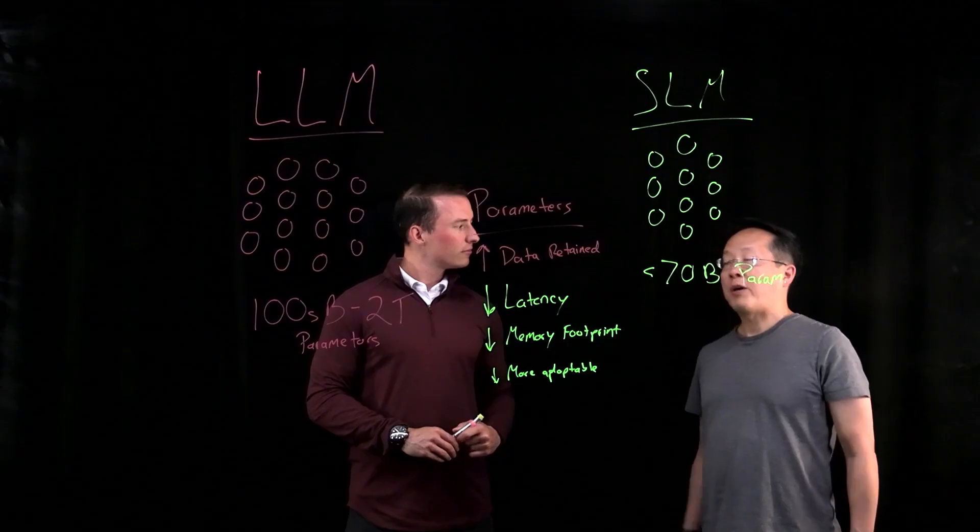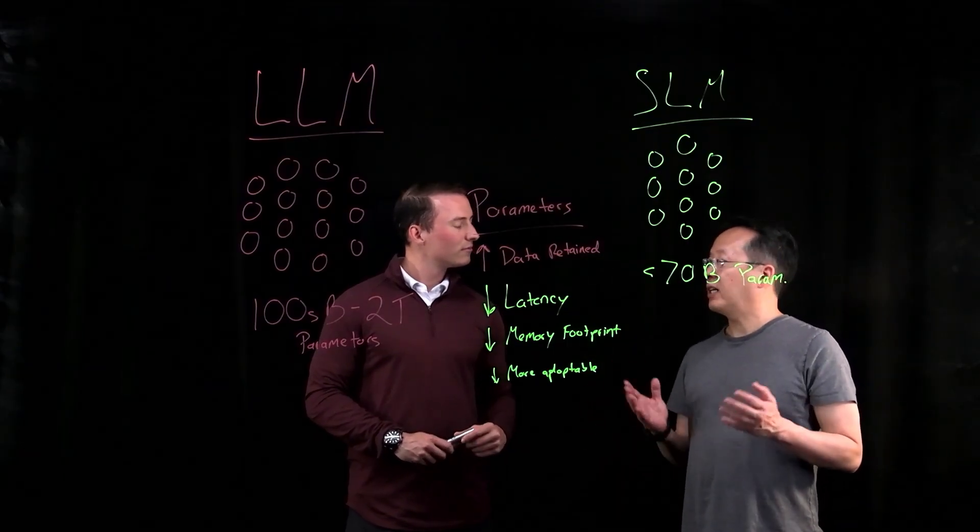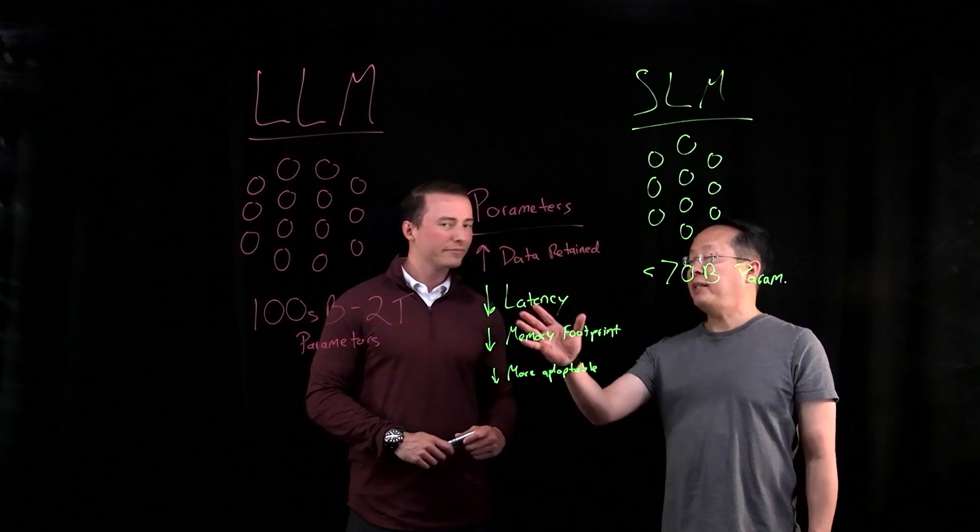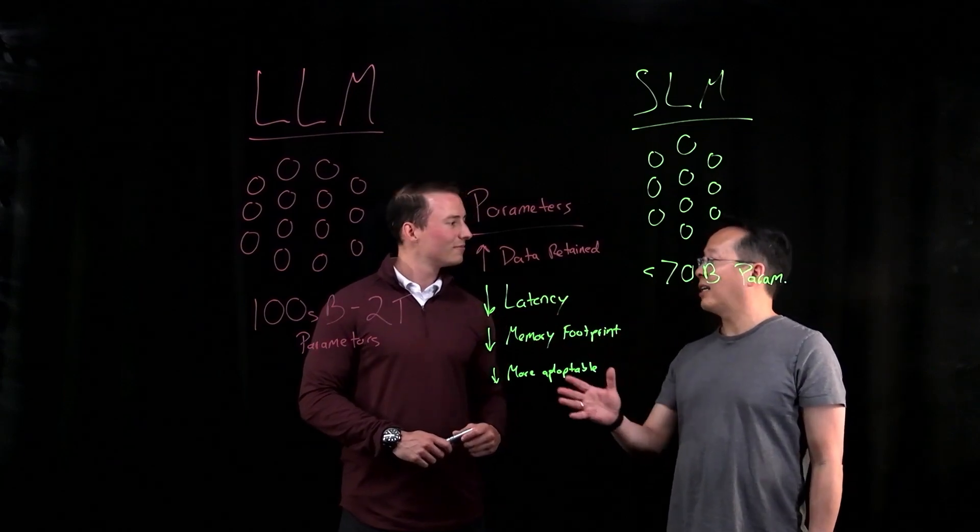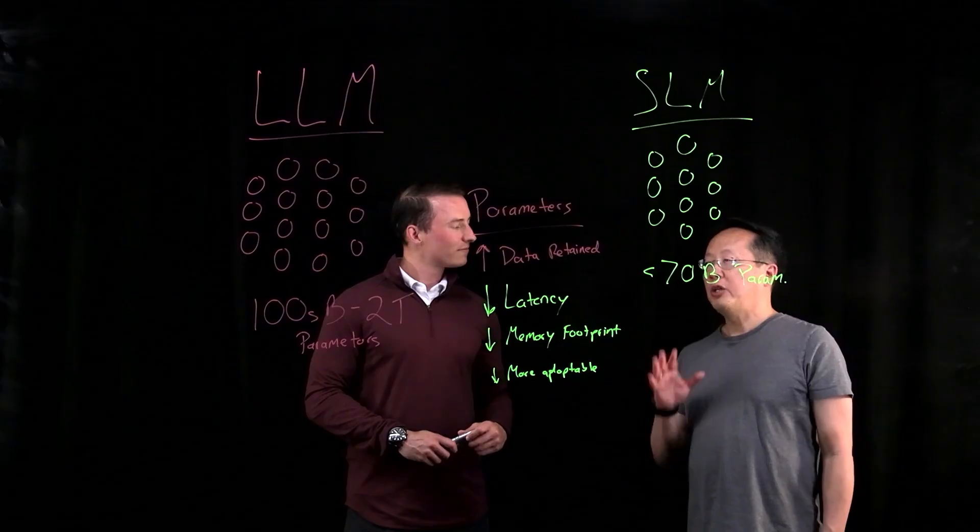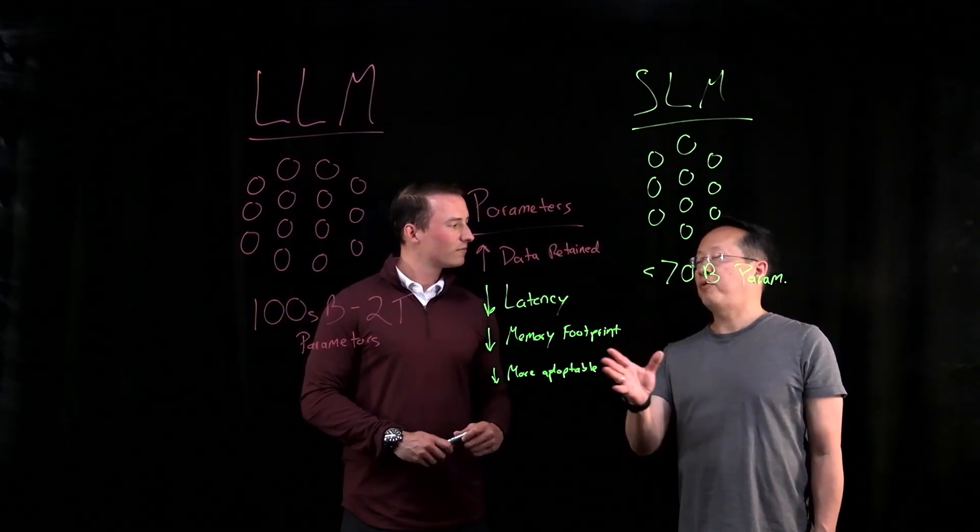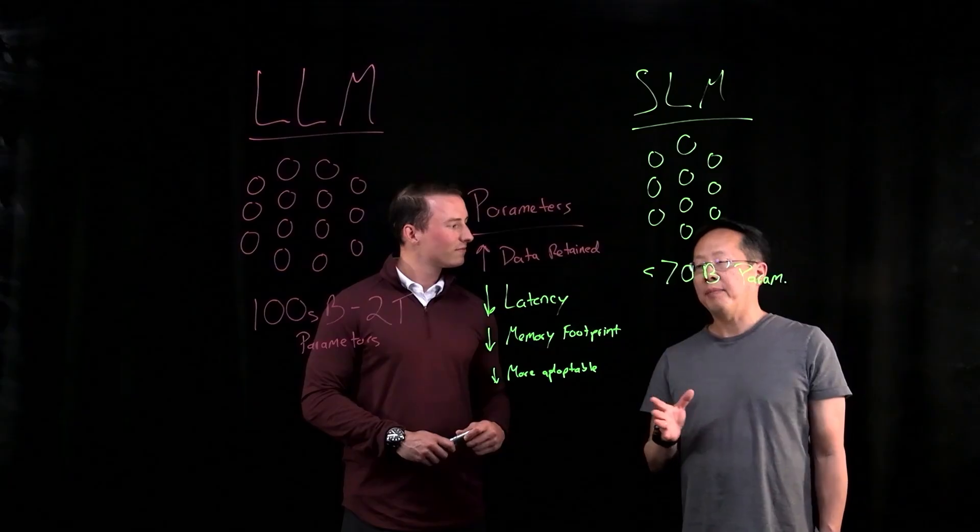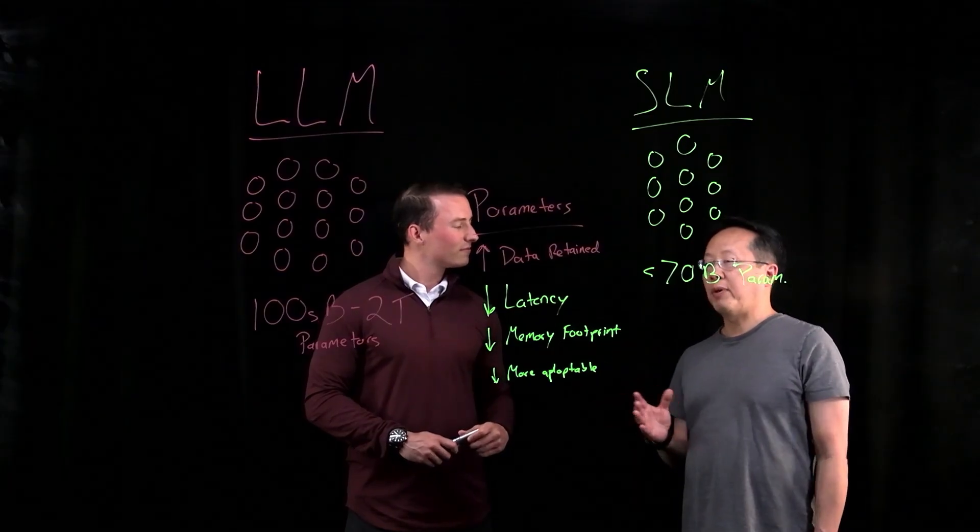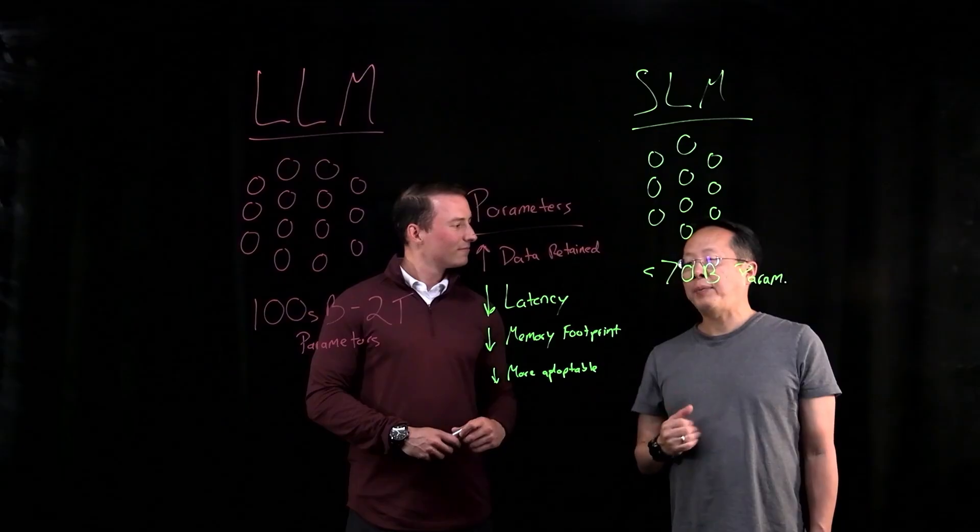Got it. So if I understand correctly, those popular LLMs that we've grown accustomed to using every day, they need to know a lot about a lot of things. But you can have cases where you don't need to know everything about everything. You can use fewer parameters like an SLM. And because you're using fewer parameters, you can have less latency, use less memory, and be more adaptable.